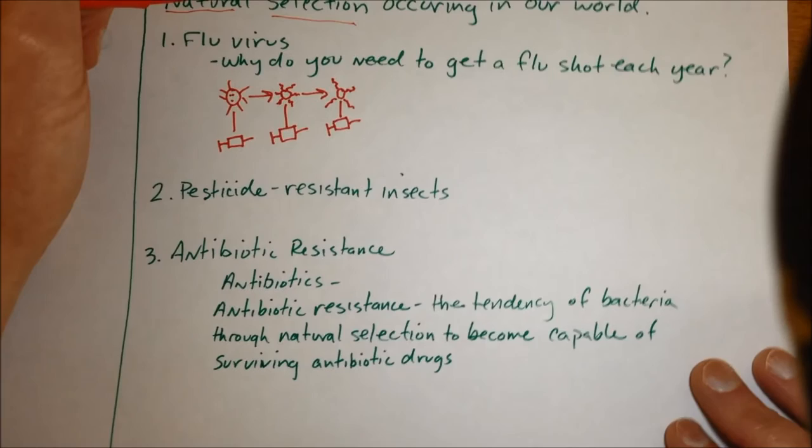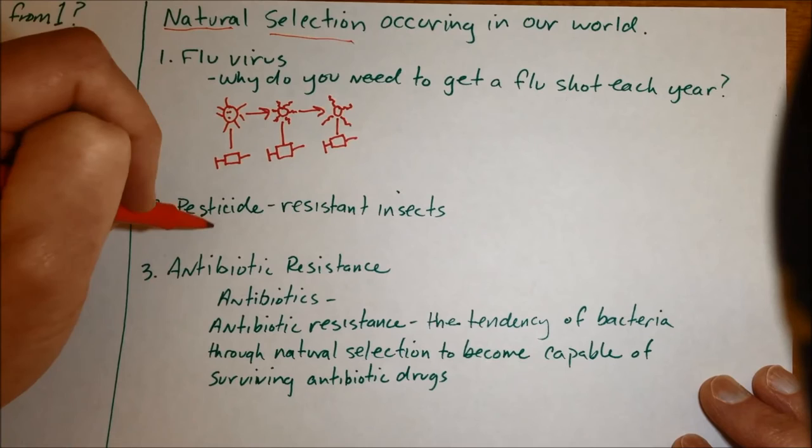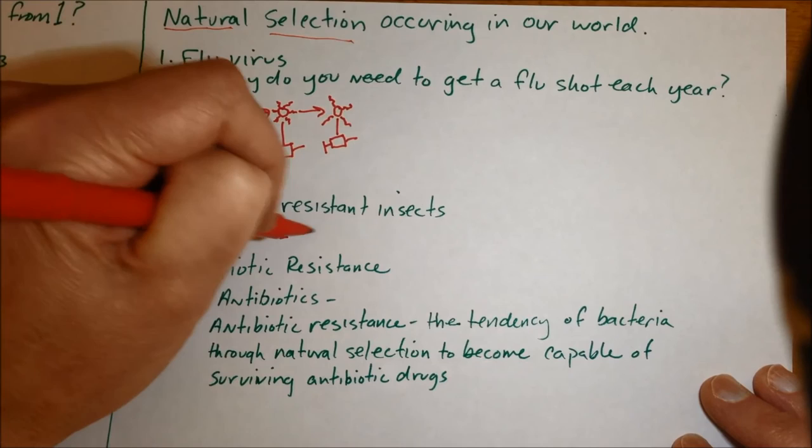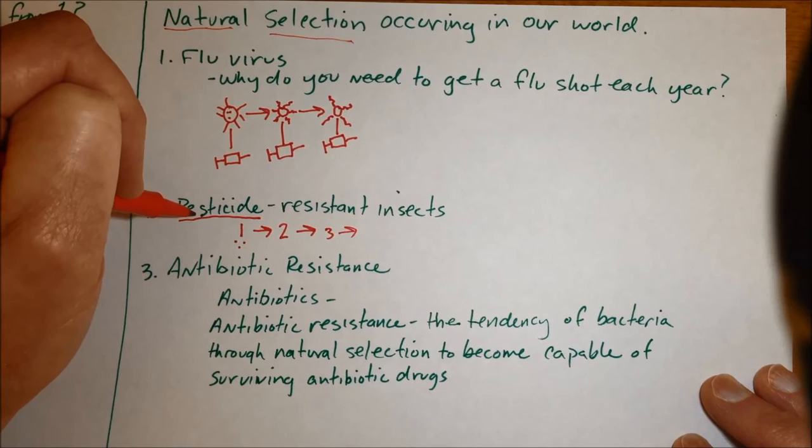Another example of natural selection in our world is pesticide resistant insects. When pesticides were first invented in the early 1900s a farmer could spray their crop with this pesticide which is a chemical that kills bugs and the corn plants let's say would grow really well without very many insects eating them at all. But real quickly after say year one, year two and year three and so on what happened was the pesticide would kill off all but the most resistant insects to the pesticide each year.